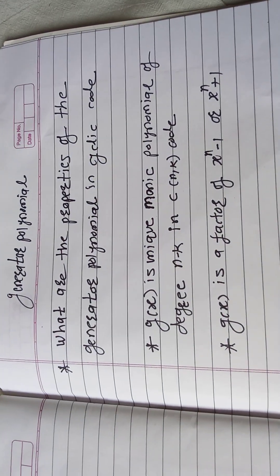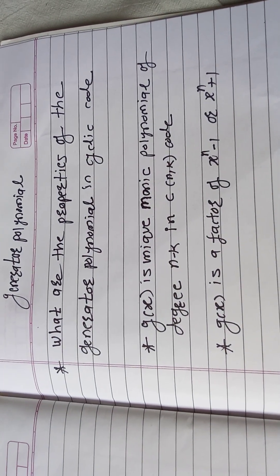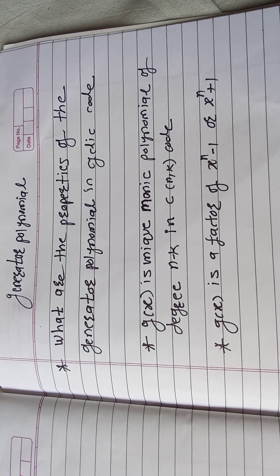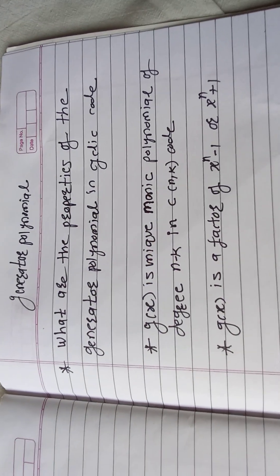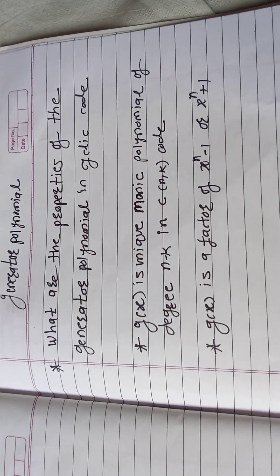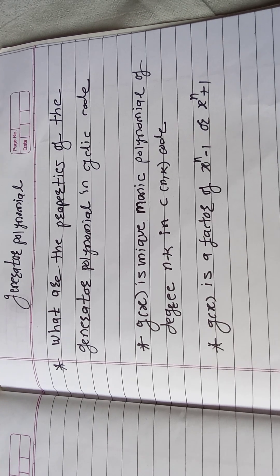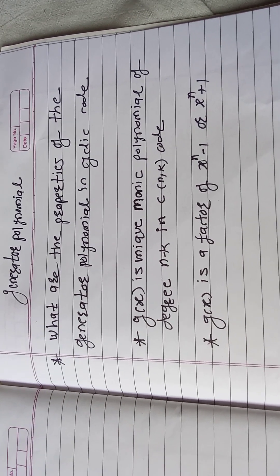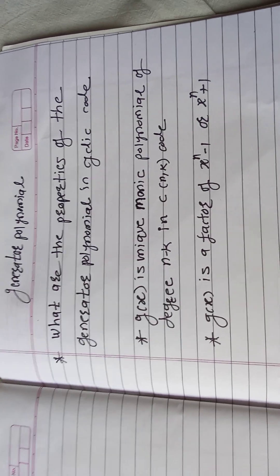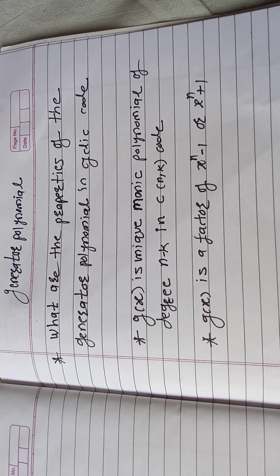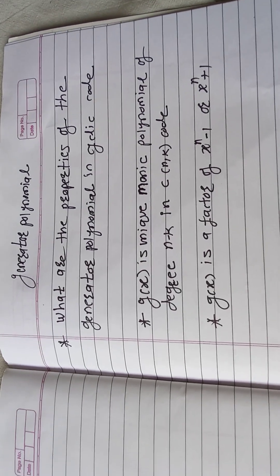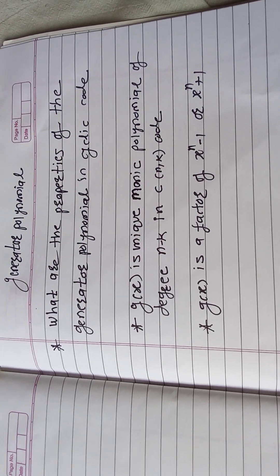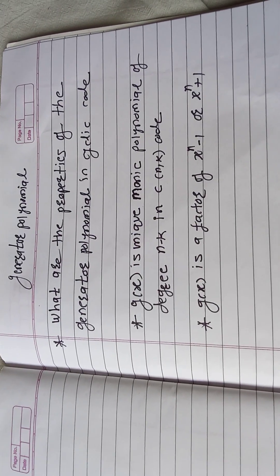Let us see what are the properties of generator polynomial in cyclic code. In cyclic code we use the generator polynomial to generate the codes. In non-systematic cyclic code we just multiply the message polynomial with the generator polynomial to get the code polynomial, and in systematic cyclic code we do the division method. So we should know what are the properties of the generator polynomial.